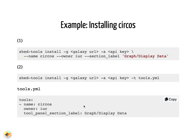If you want to install a different revision of Circos, you can supply the revisions argument. By default, the latest revision will be installed.